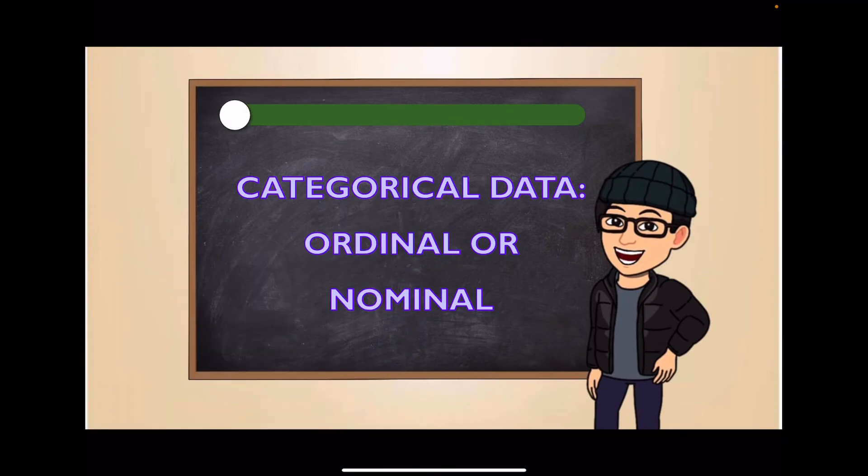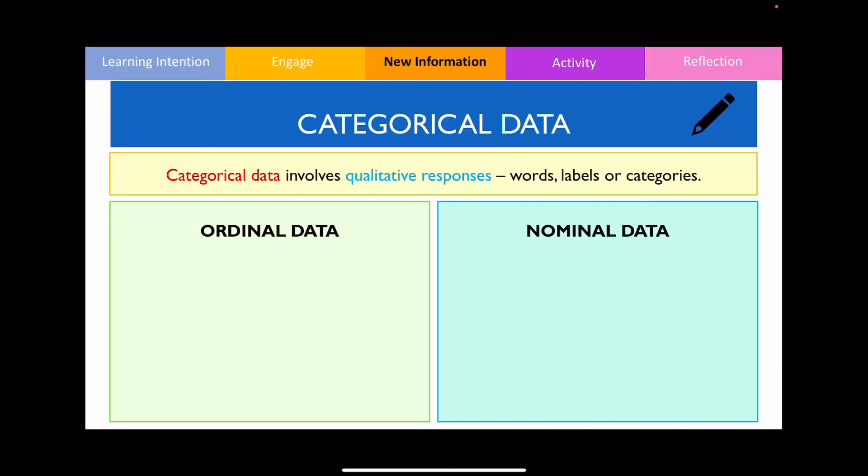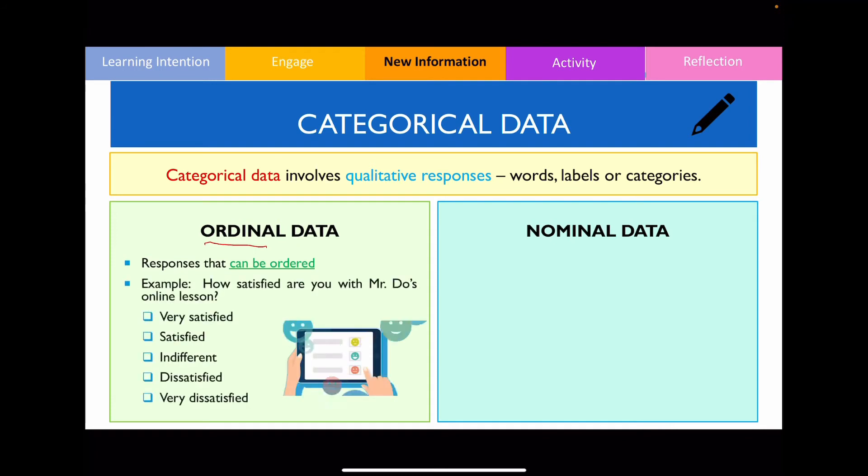So categorical data can be further classified as ordinal or nominal data. Now the word ordinal sounds very similar to the word order. So you can think of ordinal data as data that can actually be ordered. An example of ordinal data is listed down below. So notice how each of these responses, very satisfied, satisfied, indifferent,